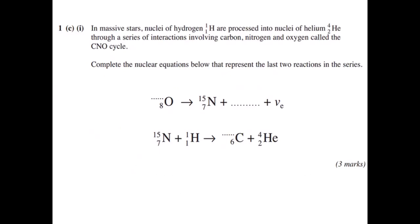So in massive stars, nuclei of hydrogen are processed into nuclei of helium, so we're looking at some sort of fusion process there. And this happens through a series of interactions involving carbon, nitrogen, and oxygen, called the CNO cycle. So we want to complete the nuclear equations below that represent the last two reactions in those series. So let's look at the first equation here. So what we don't currently know is the relative atomic mass of the oxygen, or there's a particle missing on the far right hand side. So the first thing you need to think is, well, your oxygen is decaying into something. So you need to pick a radioactively unstable isotope of oxygen. So there's two that we know about, oxygen-15 and oxygen-16. 16 is the stable form, because that's what's in the air around us. So if it's going to decay, it must be the unstable form. So it must be this oxygen-15.